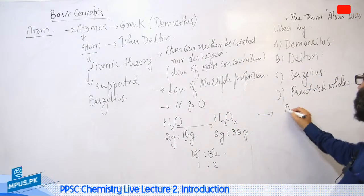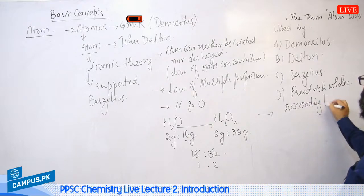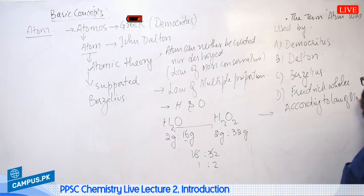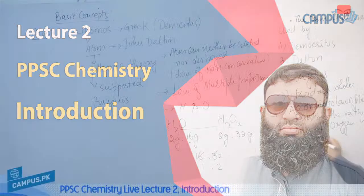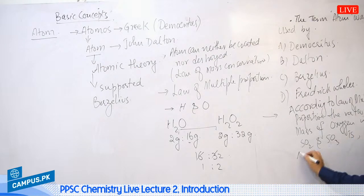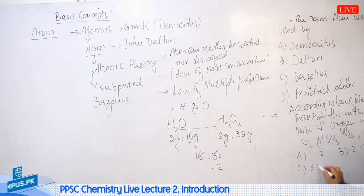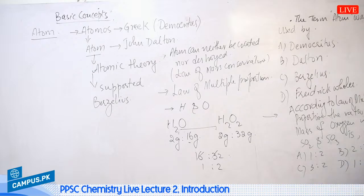According to the Law of Multiple Proportion, the ratio in mass of Oxygen in SO2 and SO3 is: option one ratio 2, option two ratio 3, option three ratio 2, option four is 1 ratio 4. The answer here will be two ratio 3.